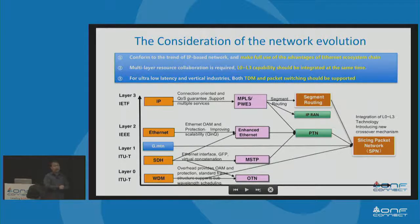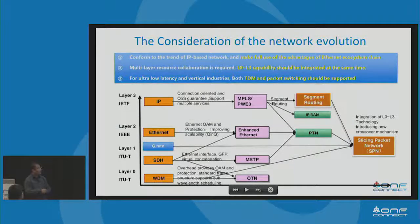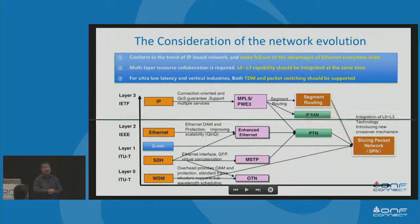Before talking about our solution, let's review the history of the network. In the last three decades, there has been no big change. At layer zero we have WDM, at layer one we have SDH, at layer two we have Ethernet, and at layer three we have IP. In order to carry 3G and 4G, a lot of operators changed their network from TDM-based SDH to packet-based networks — we call that IP RAN or PTN network.